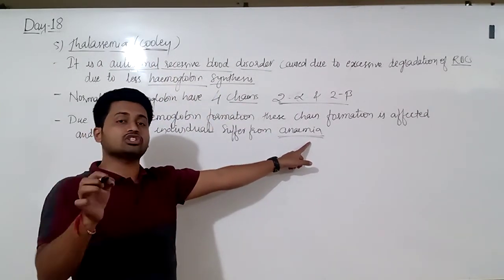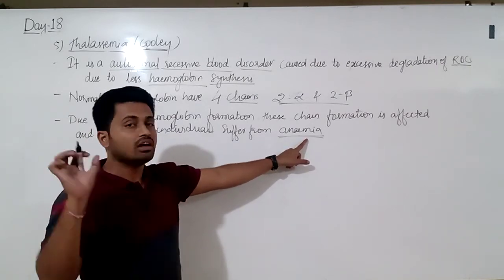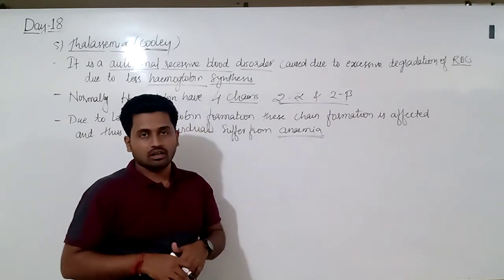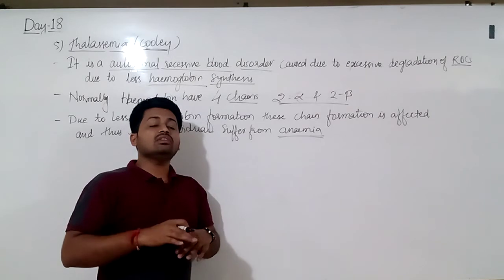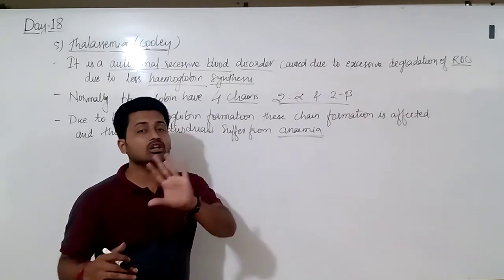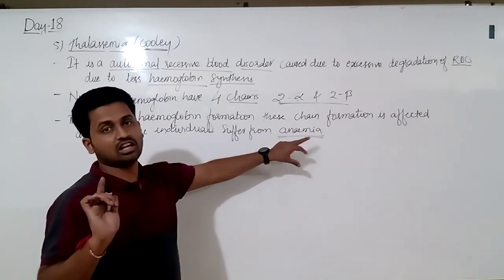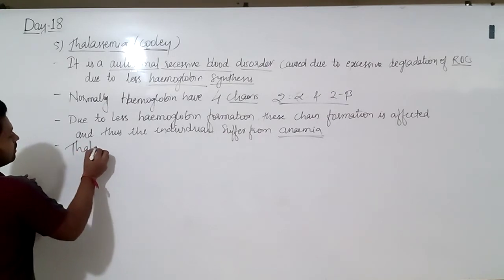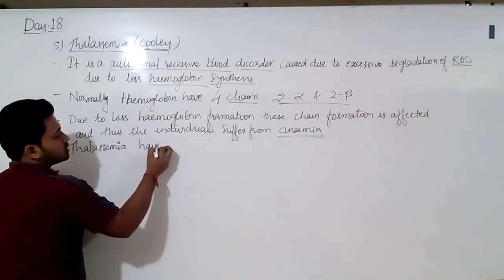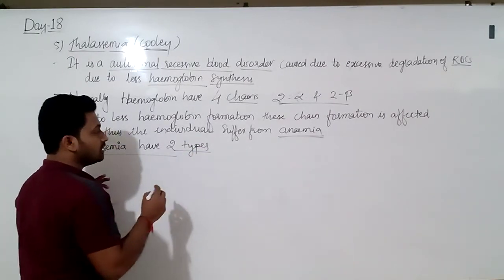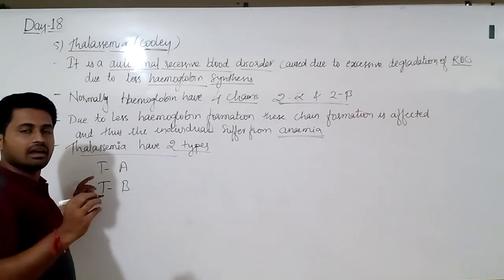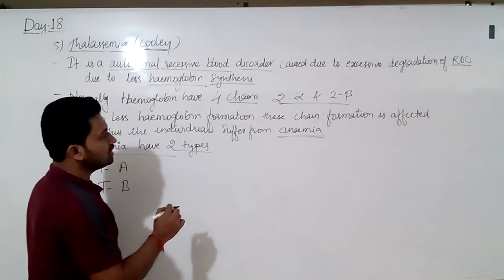The individual thus suffers from anemia — that is the characteristic feature of thalassemia. The gene produces less amount of hemoglobin, which affects proper formation of the four chains, and hence the individual suffers from anemia. Thalassemia has two types: thalassemia A and thalassemia B.